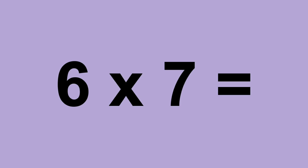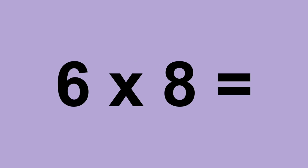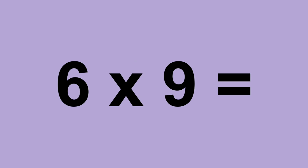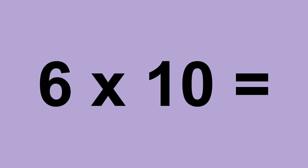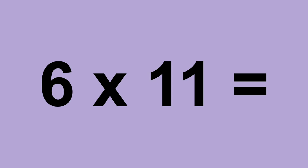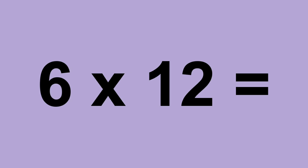Six times six equals thirty-six. Six times seven equals forty-two. Six times eight equals forty-eight. Six times nine equals fifty-four. Six times ten equals sixty. Six times eleven equals sixty-six. Six times twelve equals seventy-two.